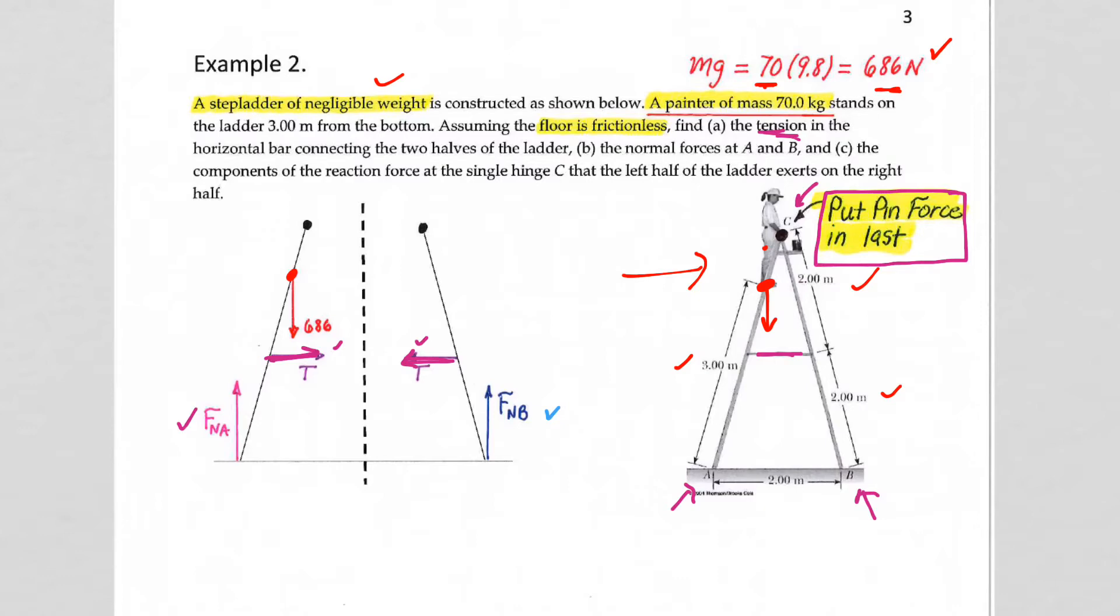So, let's just look at the left-hand side first. So, we have 686 down. We have a normal force up, so those two could balance, but here we have a problem. We have the tension to the right, so the pin force has to have a force to the left.